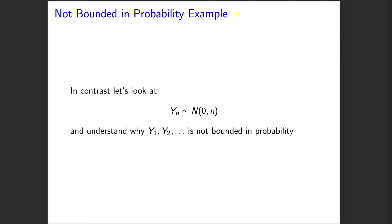In contrast, let's consider a sequence that's not bounded in probability to help us better understand that definition. We'll look at a sequence of Gaussian random variables whose mean is always zero but whose standard deviation grows. The variance of the nth random variable yn will be n. So the variance is growing as we traverse our sequence, and we'll visually look at these to understand why this would violate our notion of bounded in probability.